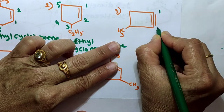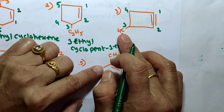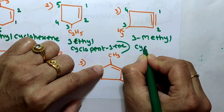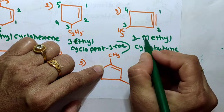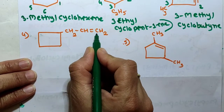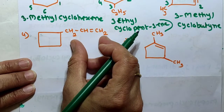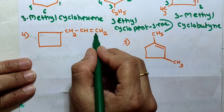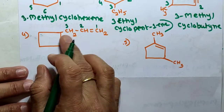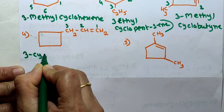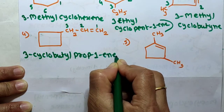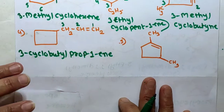For the triple bond compound, numbering starts from the triple bond: 1, 2, 3, 4. A methyl group at position 3 gives the name 3-methylcyclobutyne — adding '-yne' for the triple bond. Next: a cyclobutene ring with a 3-carbon chain containing a double bond. The chain is the longest continuous chain and the ring is the substituent, since multiple bonds are present. Numbering from the double bond: 1, 2, 3. At position 3 is a cyclobutyl group. The name is 3-cyclobutylprop-1-ene.